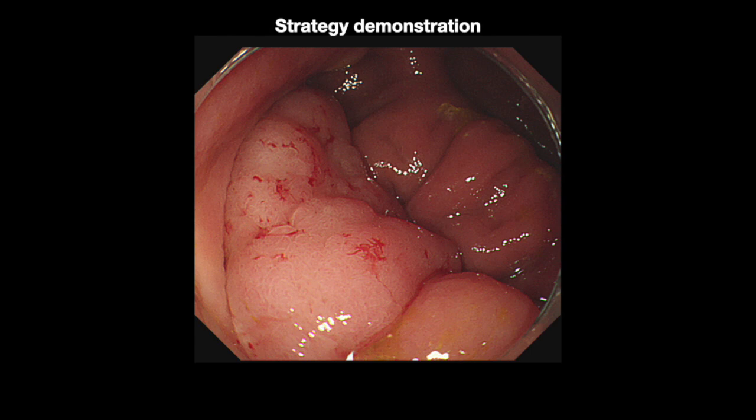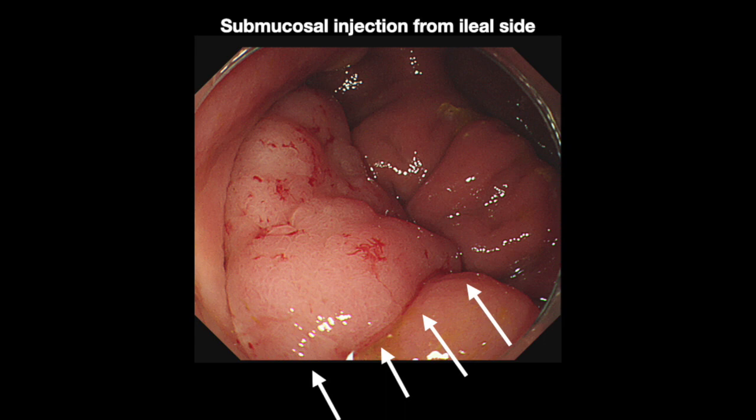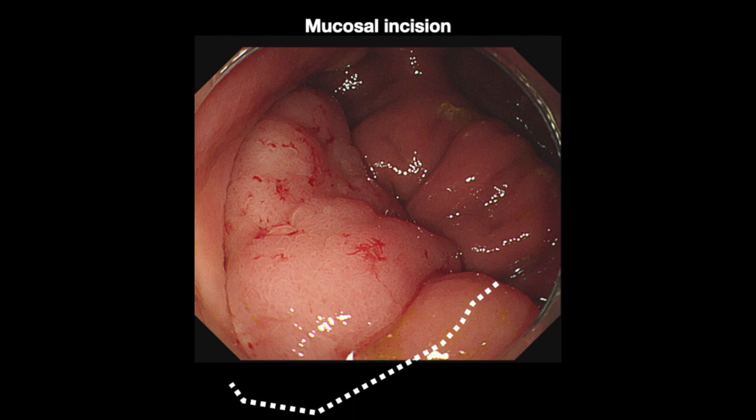Here is our strategy. All procedures should be done from the ileocecal side to prevent the tumor from retracting into the ileocecal valve, including submucosal injection, mucosal incision, trimming, and dissection.